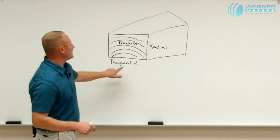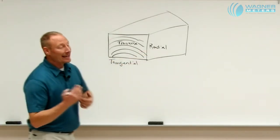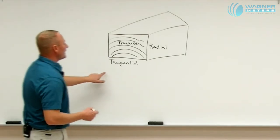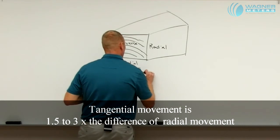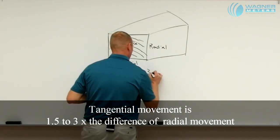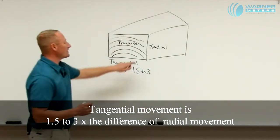The movement tangentially versus radially can and will differ. Typically, the tangential movement is 1.5 to 3 times the difference of radial.